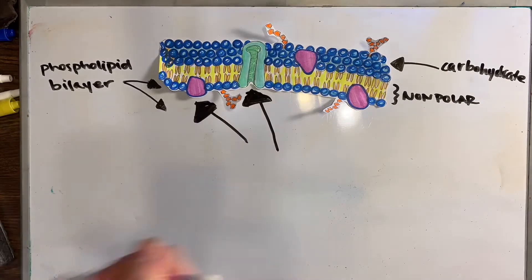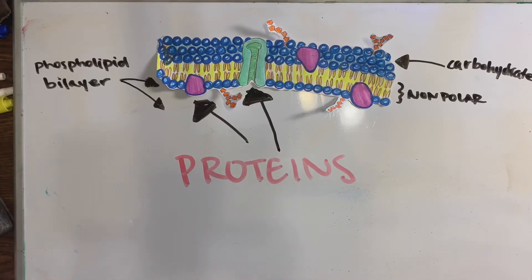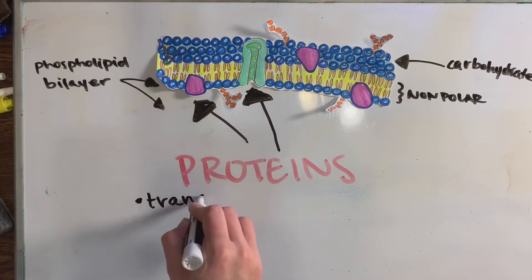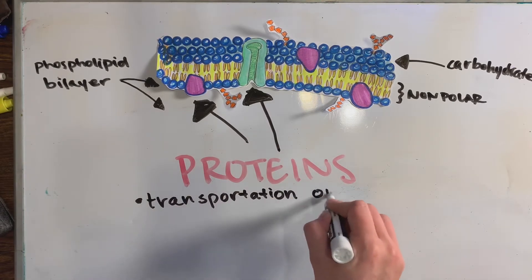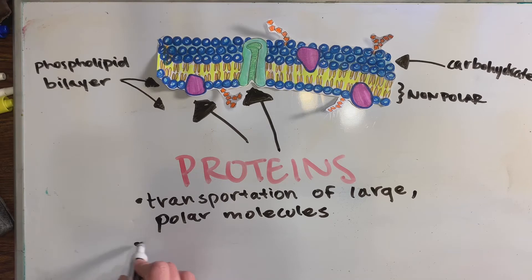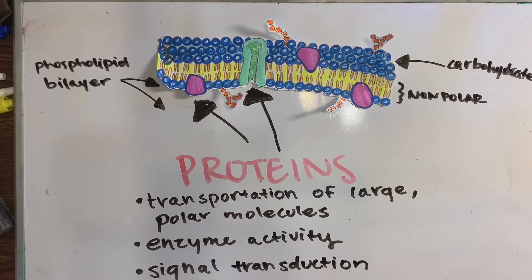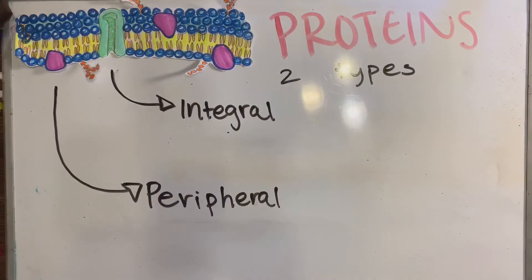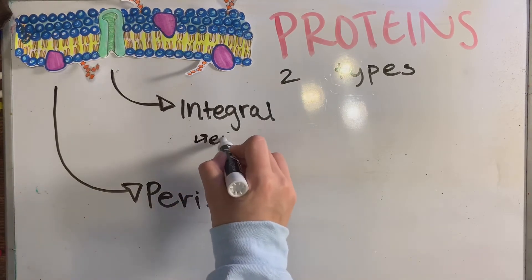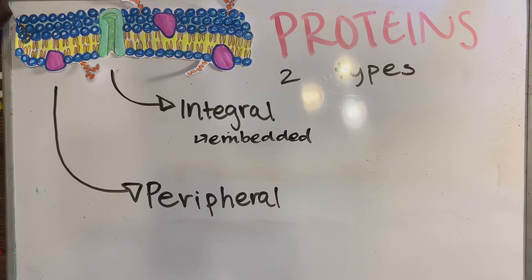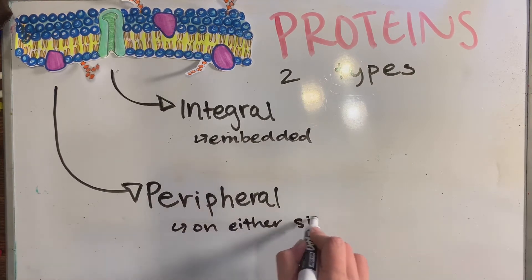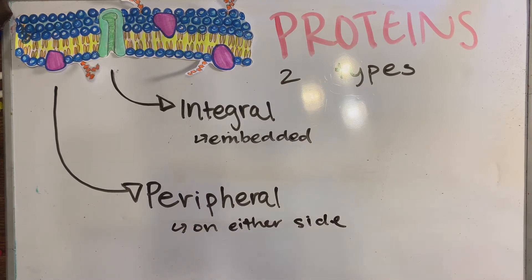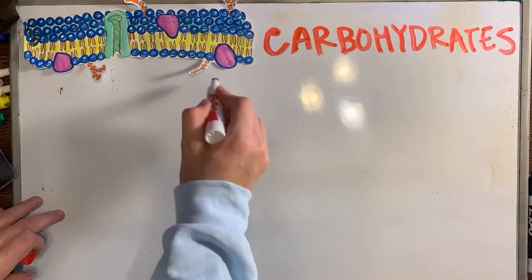Another part of this fluid mosaic model is the proteins found along the cell membrane. These proteins have many uses, including transportation of large polar molecules, enzymatic activity, signal transduction, and cell-to-cell recognition. The two types of proteins in the cell membrane are integral and peripheral proteins. Integral proteins are embedded in the membrane, while peripheral proteins are on either side of the membrane.